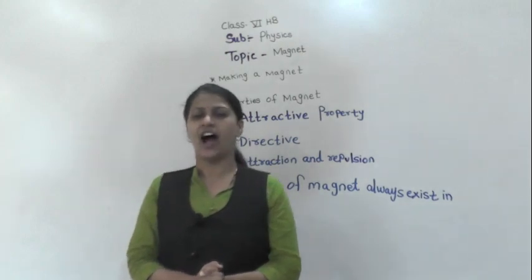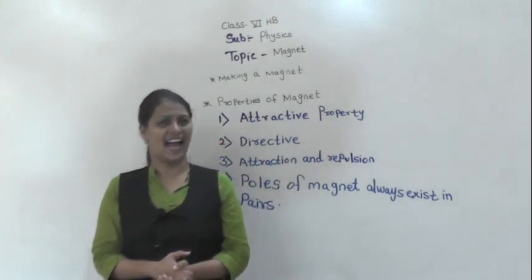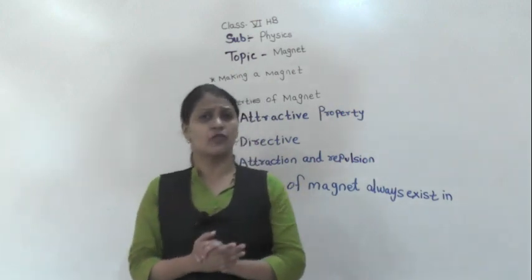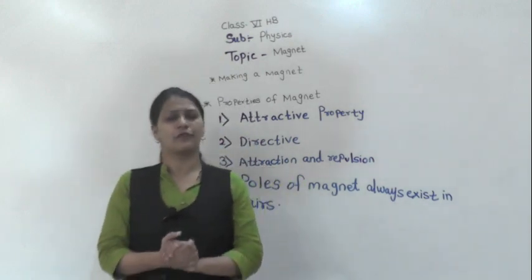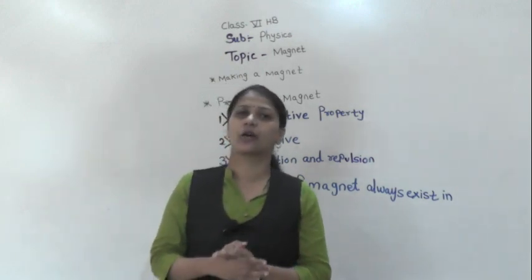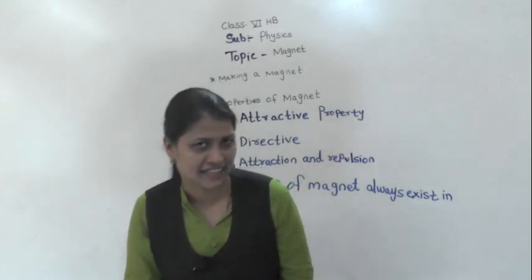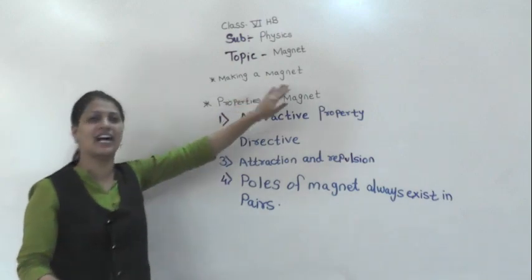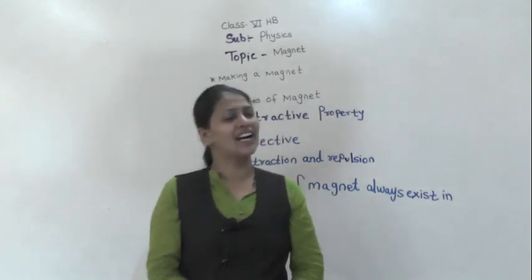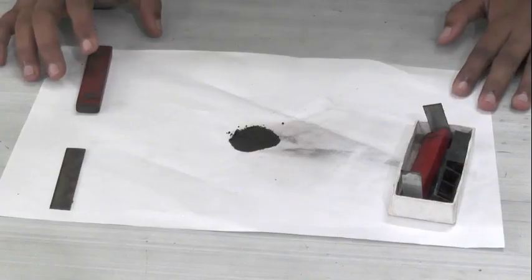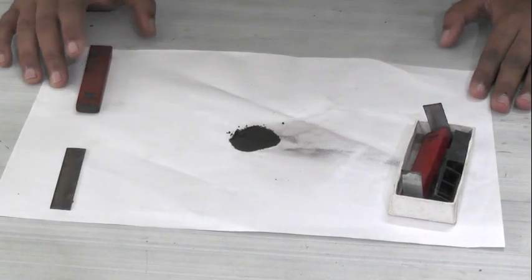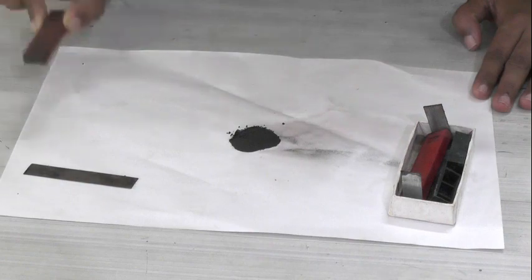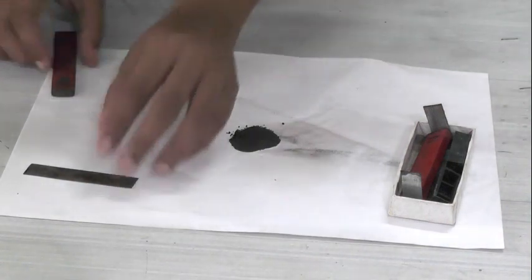Let's start today's video. We are going to do one activity — I hope you all enjoy the activity. We are going to make a magnet. The things required for making the magnet are: one iron strip, which always attracts towards a magnet, then we require a magnet, and iron filings.